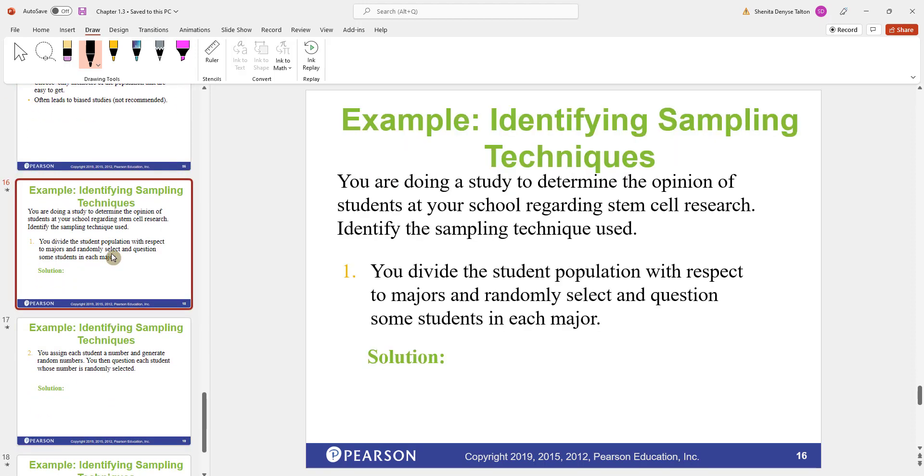Let's look at these examples and we're going to determine what type of sampling technique this is. This question is going to be applied to each type of sampling method. You're doing a study to determine the opinion of students at your school regarding stem cell research. Let's identify the sampling technique used. You divide the student population with respect to majors and you randomly select and question some students in each major. In this case, this looks like it's stratified. The majors would be the strata and then you randomly sample from each one of the majors.